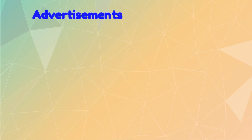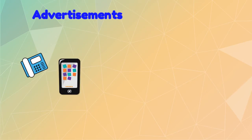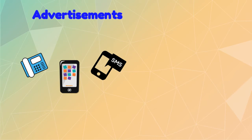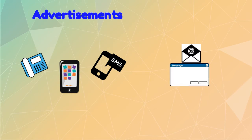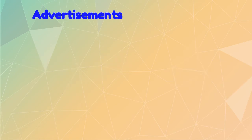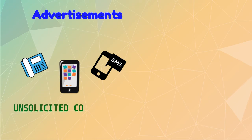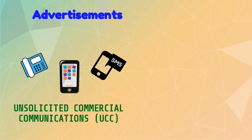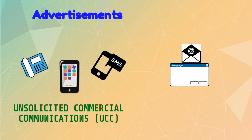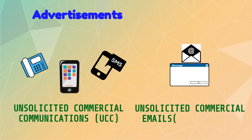In the digital age, advertisements are communicated through two important modes: through telecommunication services or through emails. The unsolicited advertisements you receive through telecommunication services are called unsolicited commercial communications or UCC, and those you receive through emails are known as unsolicited commercial emails, or what is commonly known as spam.